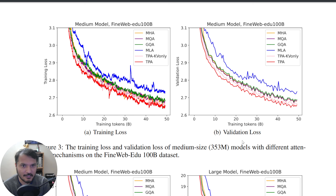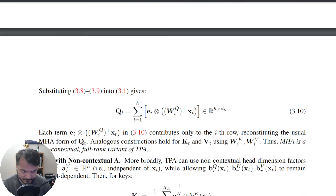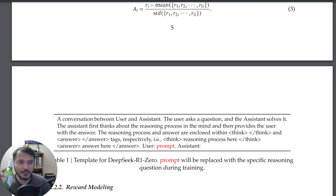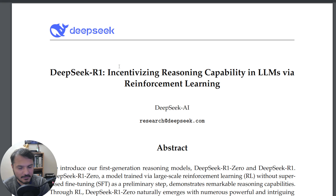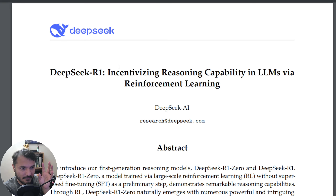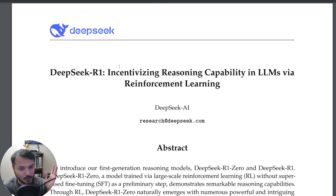Finally, DeepSeek R1. In the previous video we covered DeepSeek V3; R1 is a reasoning model. Interestingly, they skip the standard instruction-tuning or supervised fine-tuning phase. The usual pipeline is pre-training → SFT → RL, but in this paper they just remove the SFT phase and go directly from pre-training to reinforcement learning.